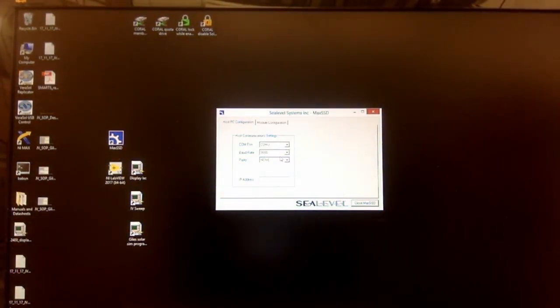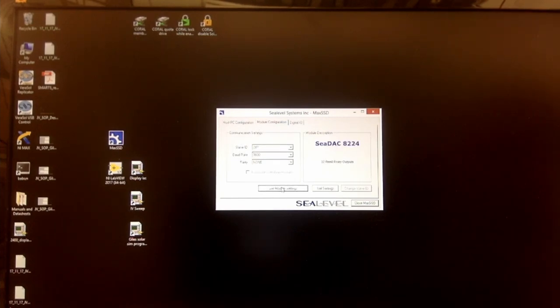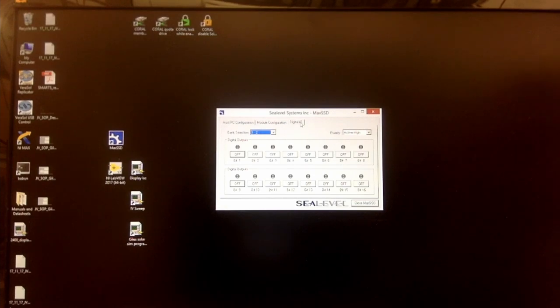Now we can begin setting up the software. First, we must launch the pixel switching software, MaxSSD, and confirm the pixel switcher is properly connected to the computer via the COM3 port by pressing the Get Module Settings button. Then individual pixels can be switched on or off as indicated by the green light.